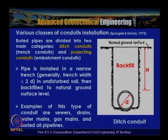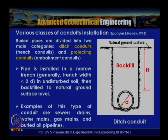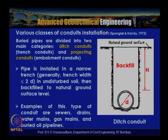Buried conduits or buried pipes are very important from the infrastructure point of view, as many underground utilities need to be embedded below ground level, both offshore and onshore. These buried pipelines are divided into two main categories: ditch conduits, which are embedded in a trench, and embankment or projecting conduits, which project above the ground surface. Based on the method of installation according to Spangler and Handy 1973, they are divided into these two principal categories.